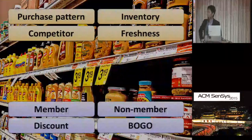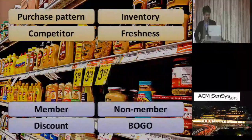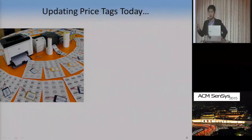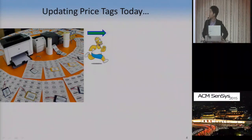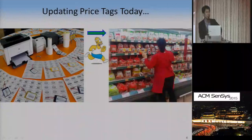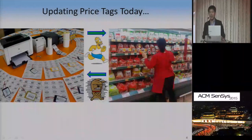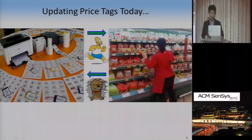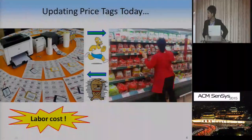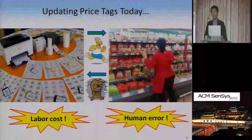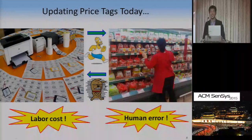Let's look in more detail at how price tags are updated today. After the market manager decides to change prices, staff print the new price tags in the office, go to the products, and replace them. Is there any problem? Yes, unfortunately. A typical marketplace is quite large and has numerous products, so staff have to go back to the office and repeat the same procedure again and again until they cover all price tags in the entire market. The first issue is labor cost. Moreover, because staff are not machines, they can make errors which bring customer complaints. This is the task we want to automate.